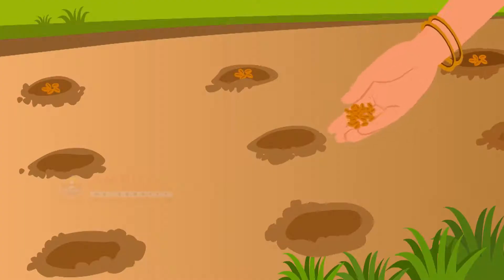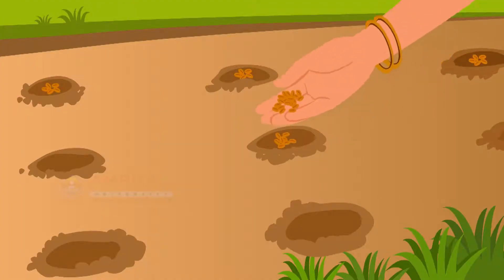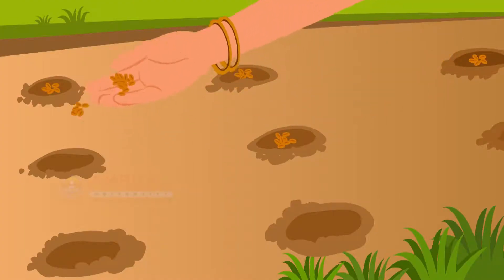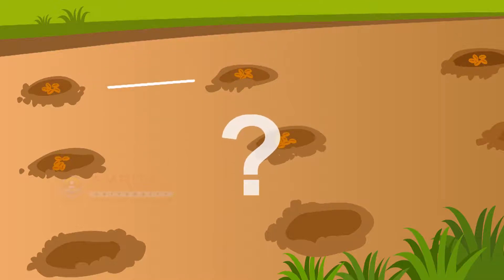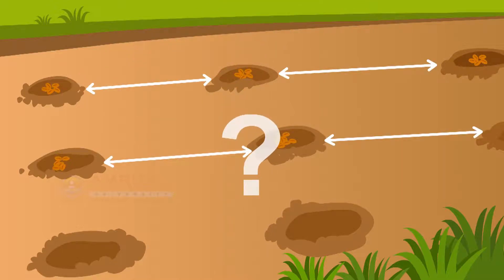Sheila is sowing wheat seeds in her farm. She needs to know at what distance the seeds should be spaced apart while sowing them.